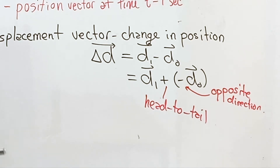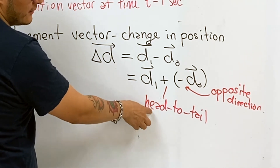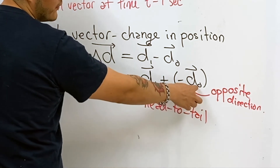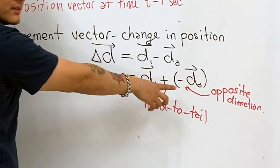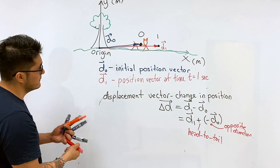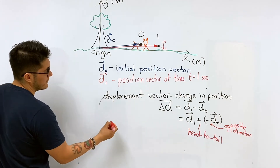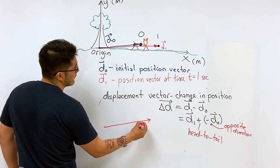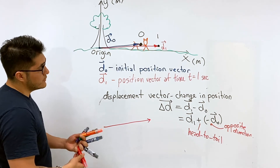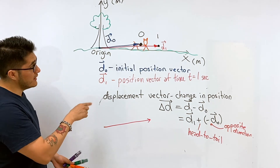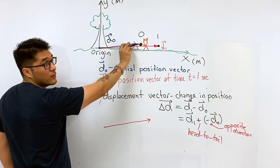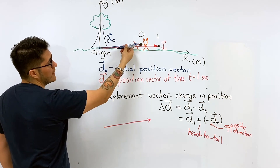So let's see what we do: first we take the head of the first position vector d₁ and attach it to the tail of our initial position vector, but in the opposite direction of it. That's our first vector placed, and we have to make the second one in the opposite direction.